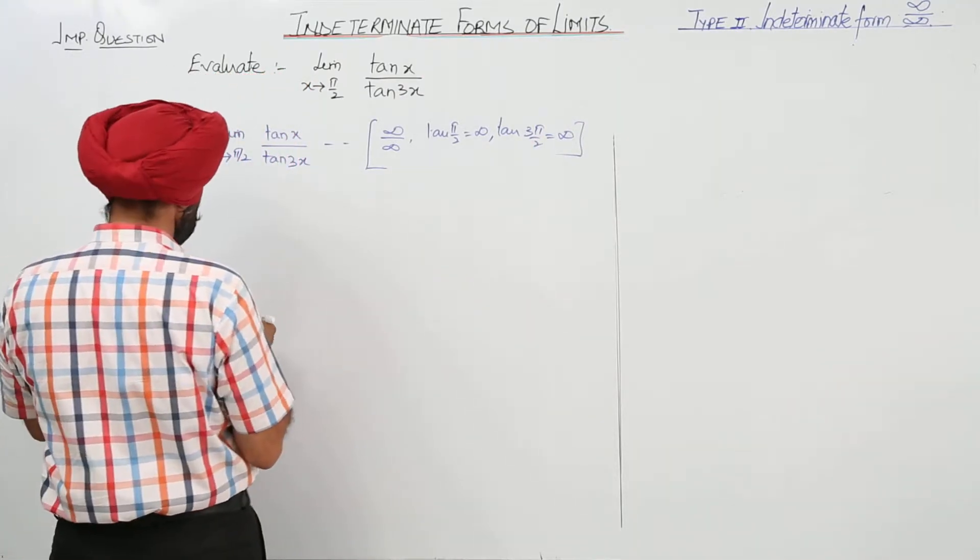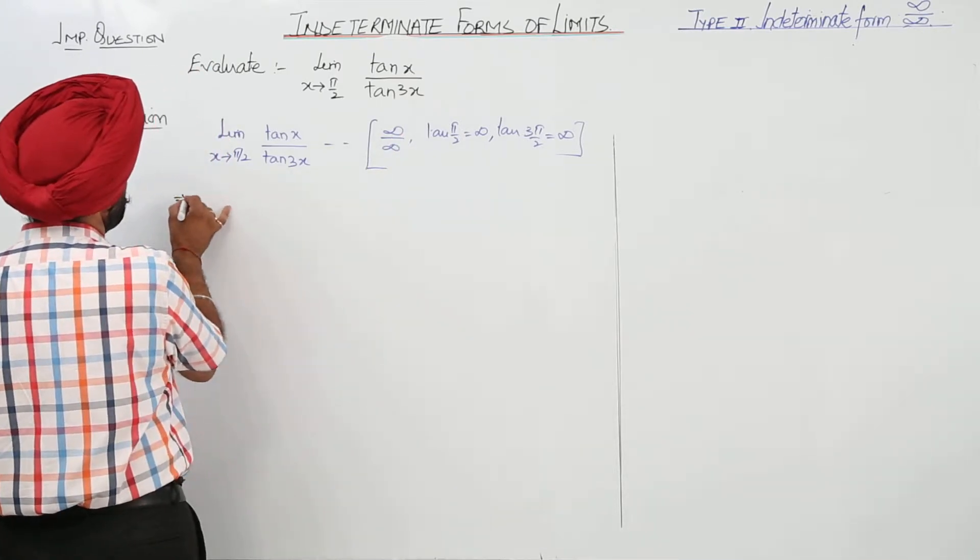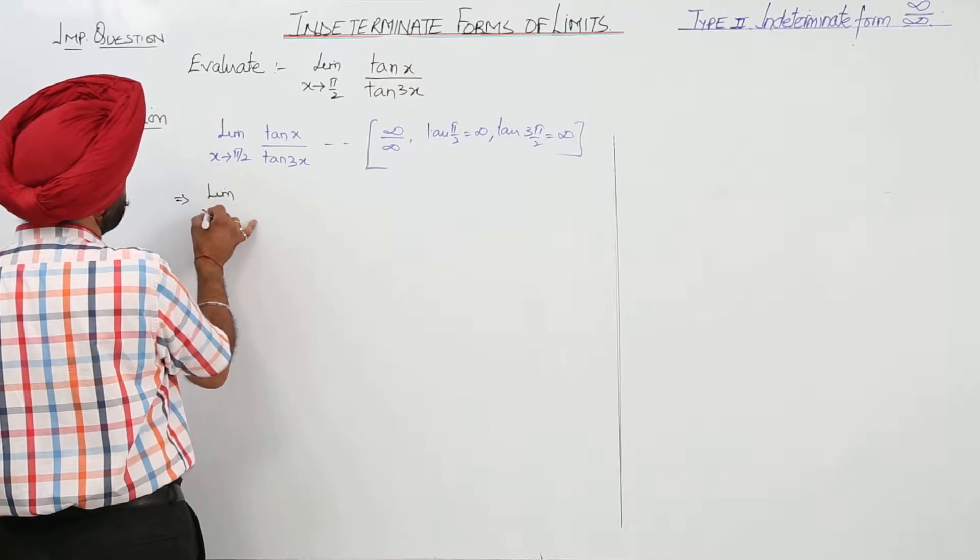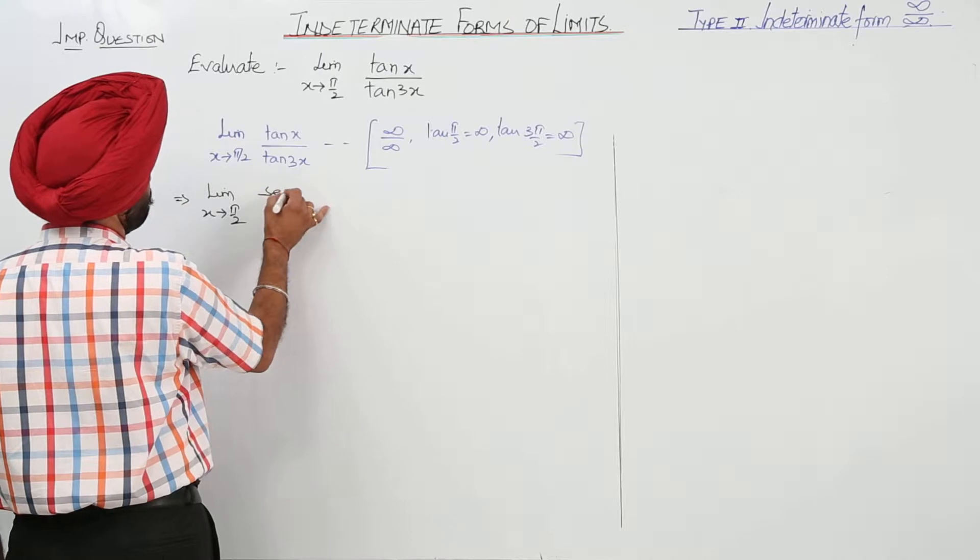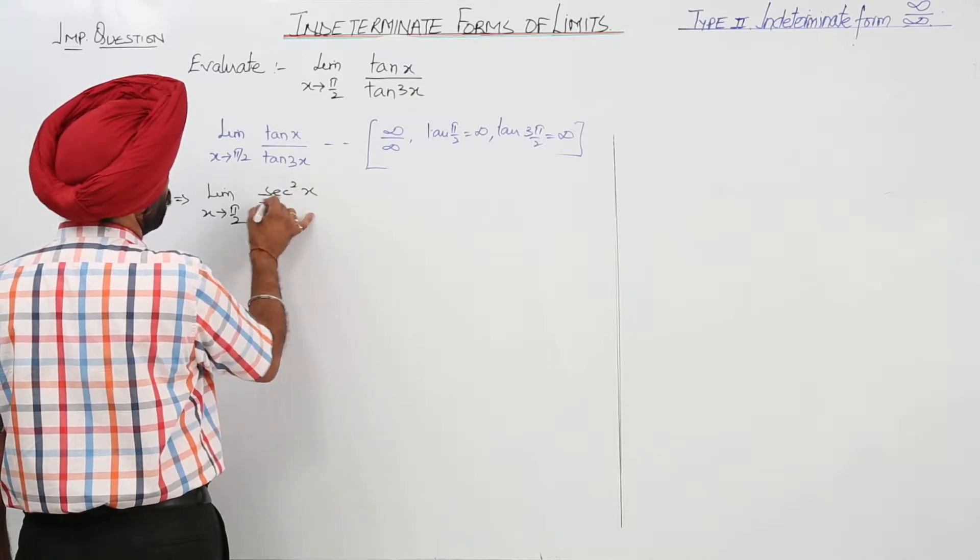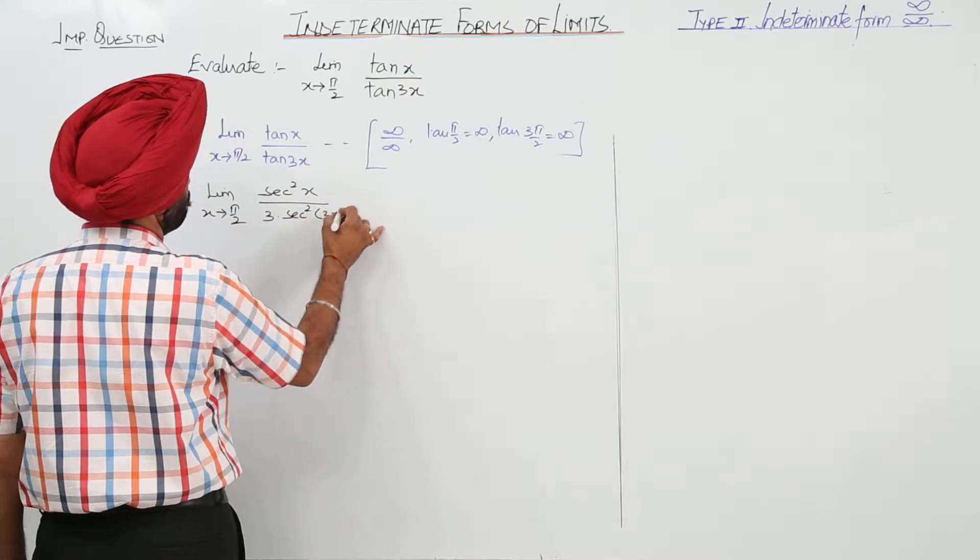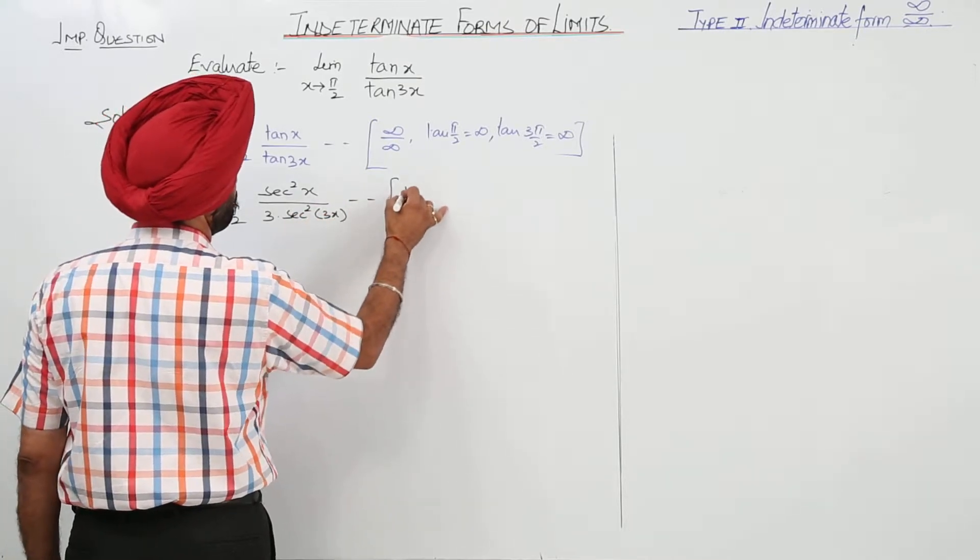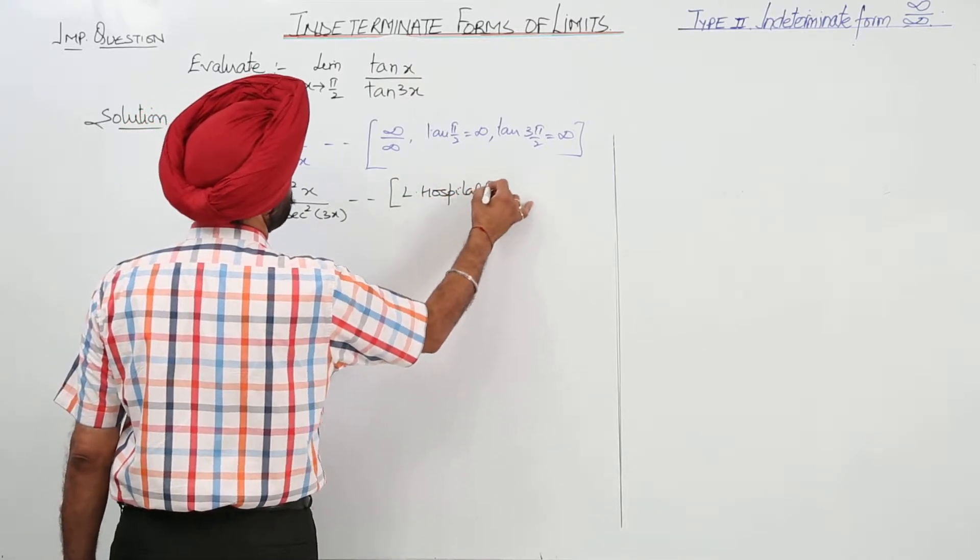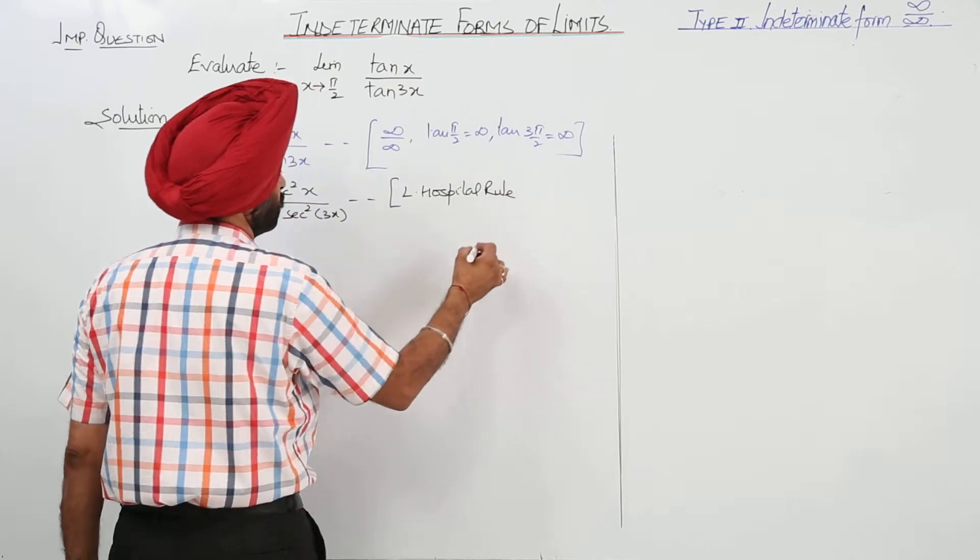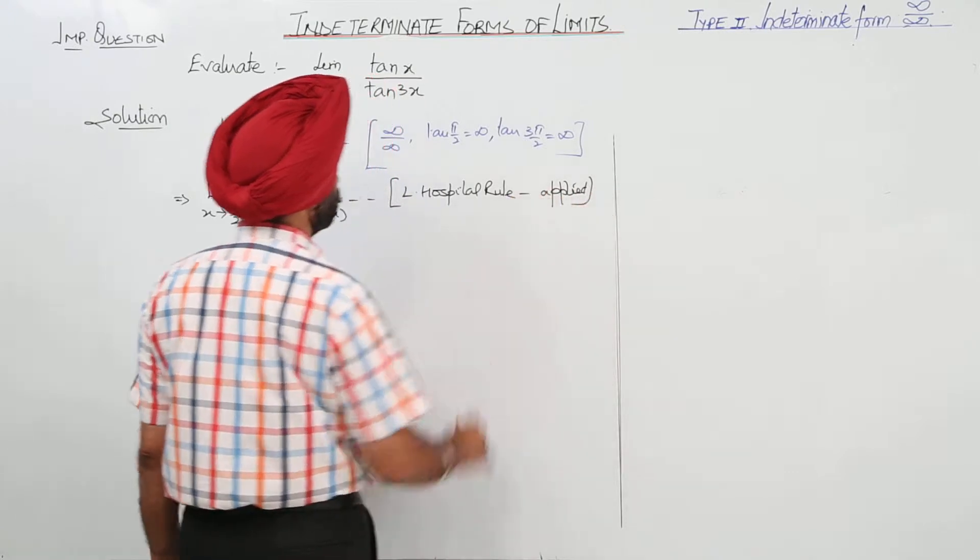So if it is infinity upon infinity, we can go for L'Hôpital's rule at π/2. Now, differentiating numerator and denominator, L'Hôpital's rule applied.